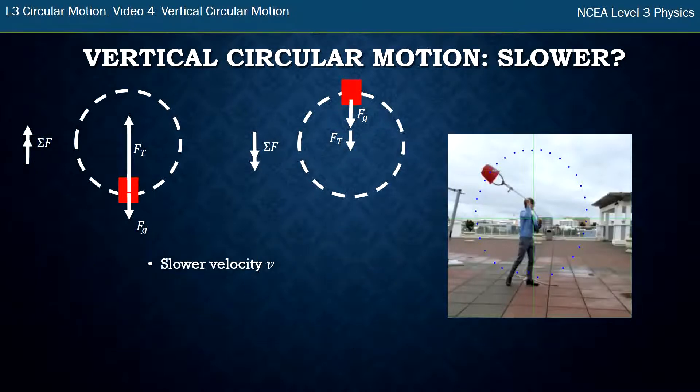What if the bucket's going slower? Well a slower velocity, same thing, total force is equal to mv² over r. You get a smaller number for v in that formula, you're going to get a smaller total force out which means our total force arrow is going to be smaller. So let's draw our diagrams again.